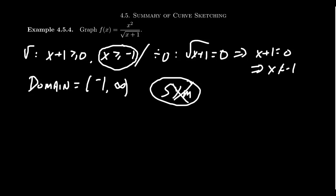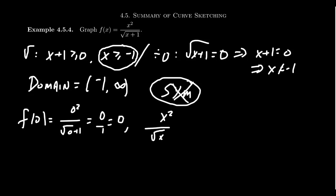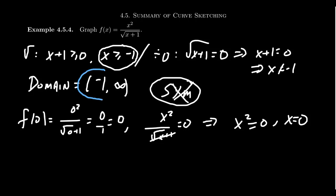For intercepts, f(0) equals 0 squared over the square root of 0 plus 1, which gives us 0 over 1, which is 0 — that's our y-intercept. For x-intercepts, we set x squared over the square root of x plus 1 equal to zero. When a fraction equals zero, only the numerator matters, so x squared equals 0, giving x equals 0. Our x-intercept and y-intercept are the same point: (0, 0). The domain is negative 1 to infinity.